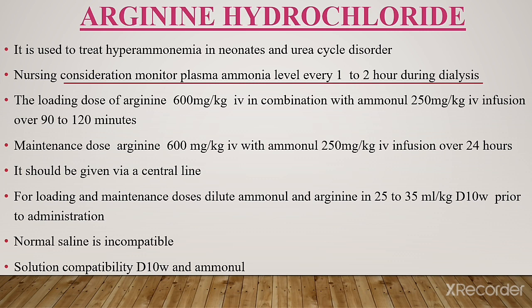Loading dose of arginine 600 mg per kg IV in combination with aminol 250 mg per kg IV infusion over 90–120 minutes. Maintenance dose of arginine 600 mg per kg IV with aminol 250 mg per kg IV infusion over 24 hours. It should be given via central line. For loading and maintenance doses, dilute aminol and arginine in 25–35 ml per kg dextrose in water prior to administration. Normal saline is incompatible. Solution compatibility: dextrose in water and aminol.